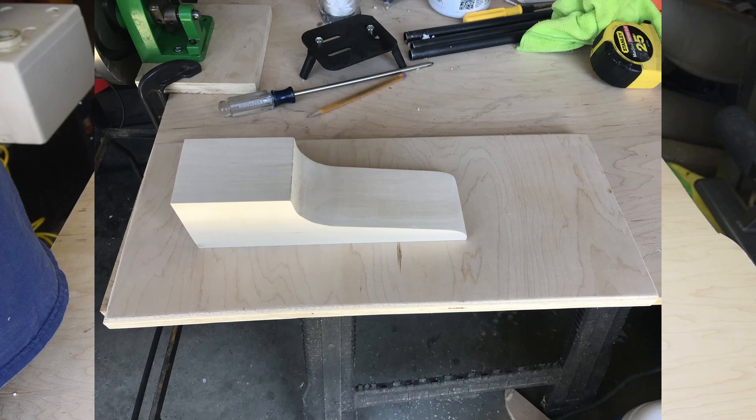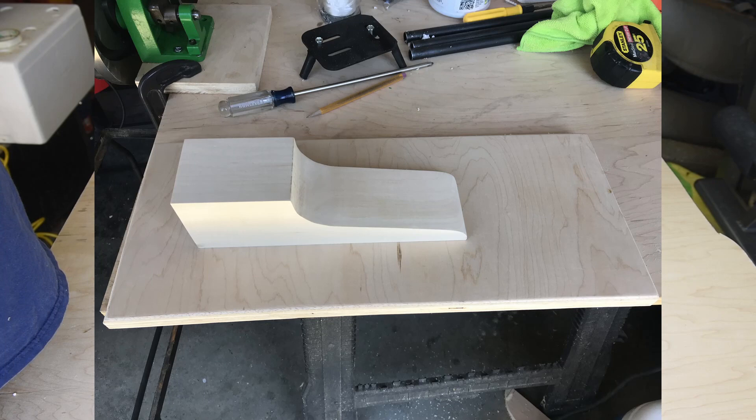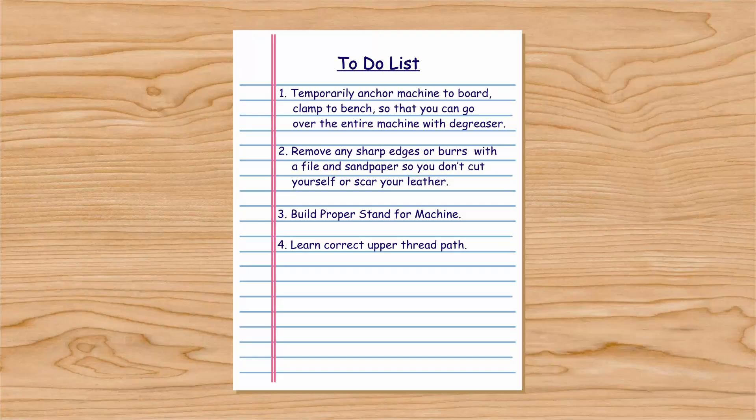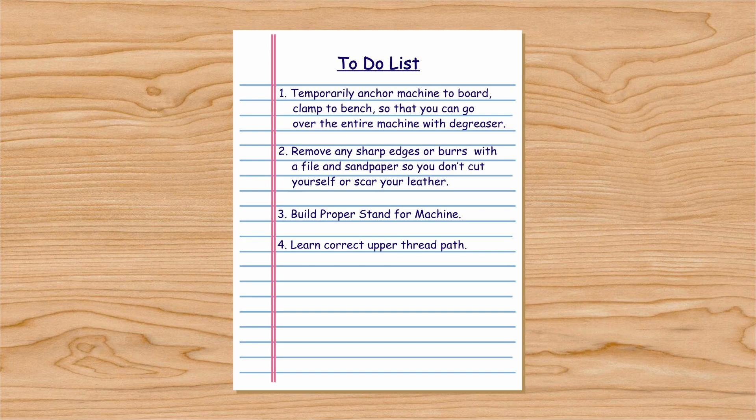Next I set about making a proper stand to mount the machine to. I had a three by three inch block of wood that I shaped on the bandsaw, then screwed this to a piece of three-quarter inch plywood. This works for me as it's a good size to clamp to a bench top and can be stored out of the way when not in use.